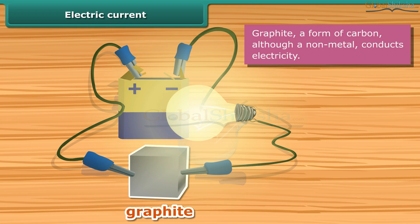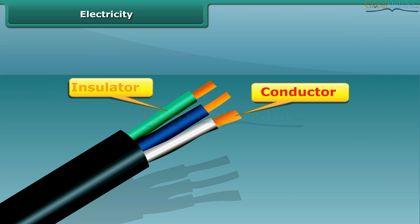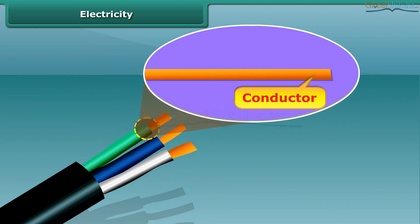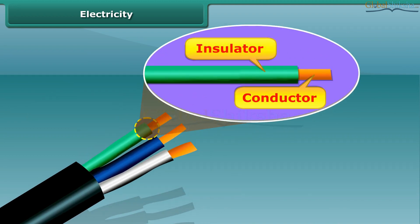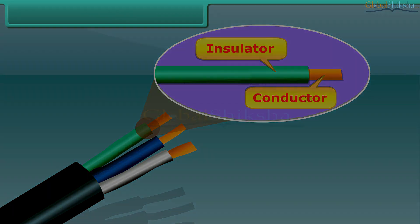If the bulb glows, the material is electrically conducting; otherwise it is an insulator. Both conductors and insulators are important while using electricity. Conductors like copper or other metallic wires are used for electric supply, but at the same time these metallic wires are coated with insulating materials like plastic or rubber for safety.